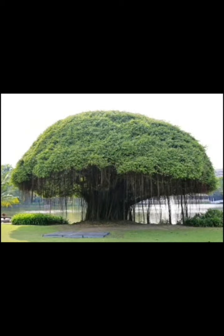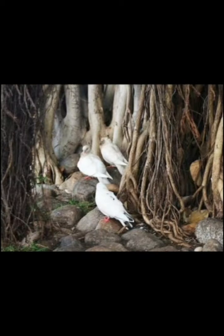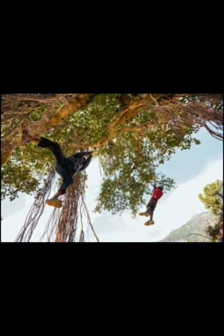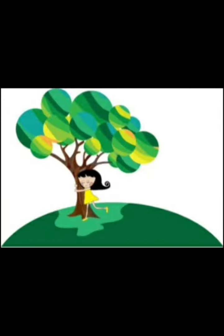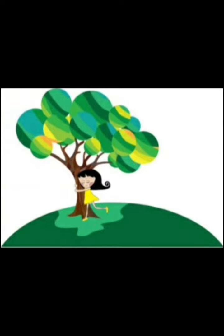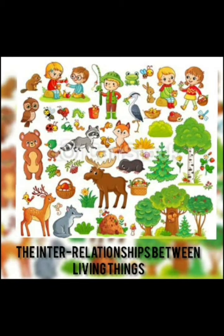The banyan tree gives shade to people. It gives shelter to birds and animals. Children use the roots to swing. In many ways, trees are useful to us. We get so many things from our environment — the air we breathe, the water that we drink. Today, let us learn something more about it, in the lesson: the interrelationships between living things.